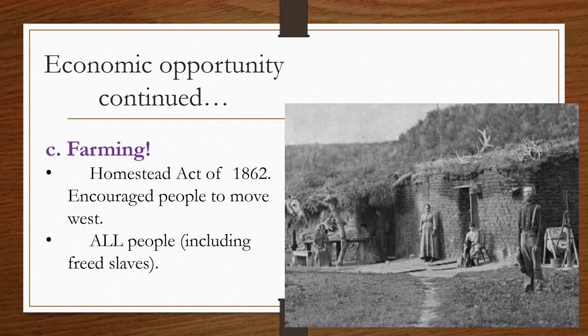Farming was another huge economic opportunity. You can see this primary source photograph of a family who moved out west — they're living in a sod house, with walls made from bricks of dirt and manure. The Homestead Act of 1862 encouraged people to move west. All people, including freed slaves, began trekking out west so they could find land to own and farm, and make money from the crops they produced. Many families started in sod houses before eventually building a log cabin.